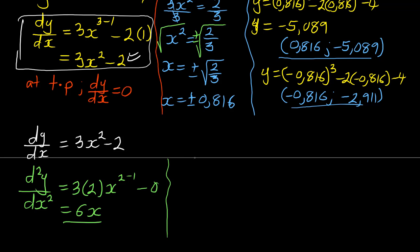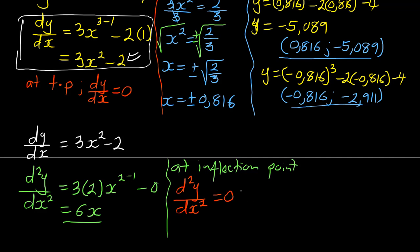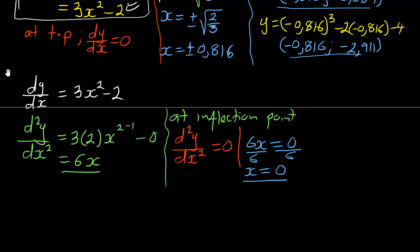What you also need to know is that at the inflection point, d²y/dx² is equal to 0. So you set 6x = 0, and dividing by 6 gives x = 0.